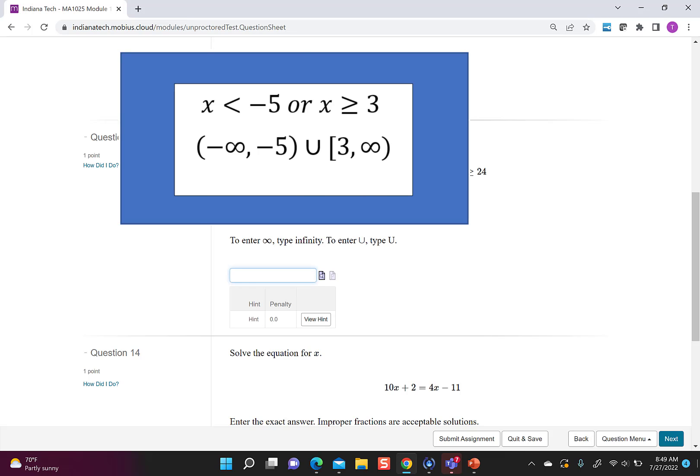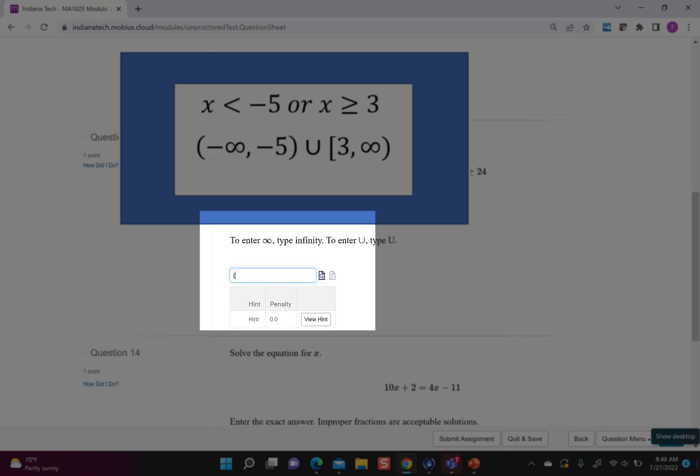So in my box, I'm going to type parentheses, negative, the word infinity, comma, negative 5, open parentheses because it was less than, then a capital U. My second interval starts at 3, and I want to have a closed bracket to show that I'm including the 3, so there's the 3, and then comma, the word infinity, and then an open parentheses.